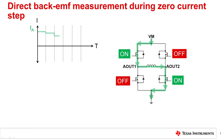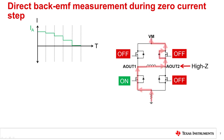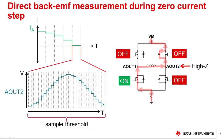Once the motor is running and the winding current approaches the zero current step, one side of the H-bridge is placed in a high impedance state and the opposite low side FET is turned on for a brief amount of time, also known as the back EMF sample threshold. This allows the current to quickly decay through the low side FET and the body diode of the opposite high side FET. Then the back EMF is sampled on the high-Z output at the end of the back EMF sample threshold. During normal motor operation, the sampled back EMF should be greater than zero.